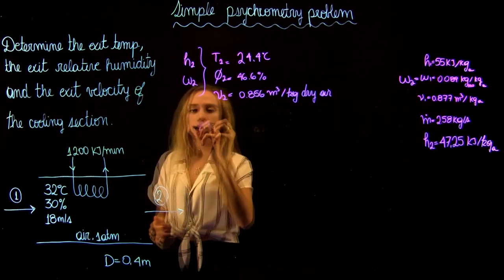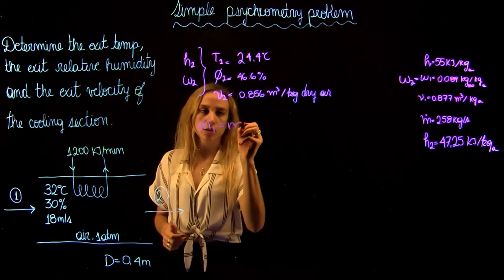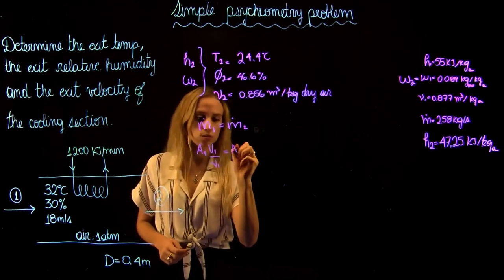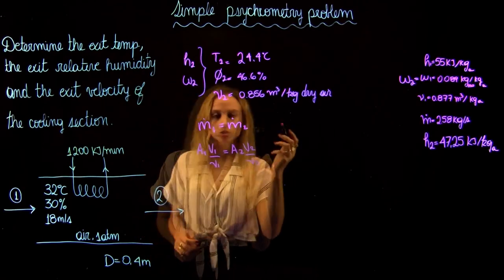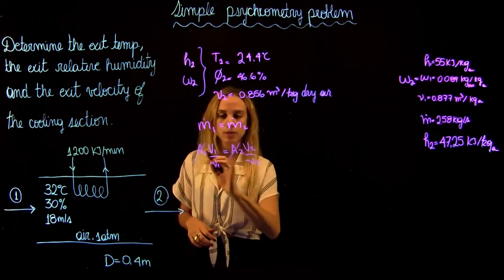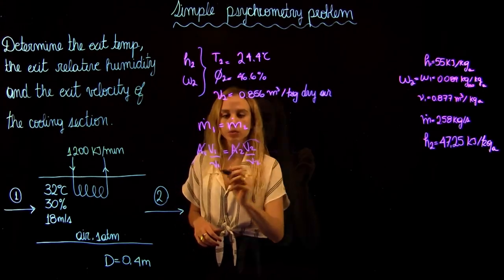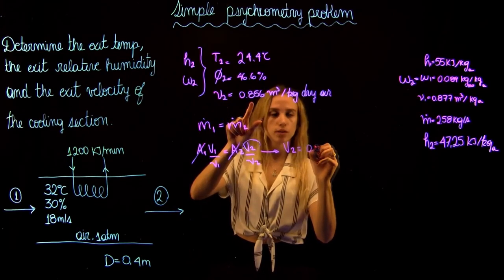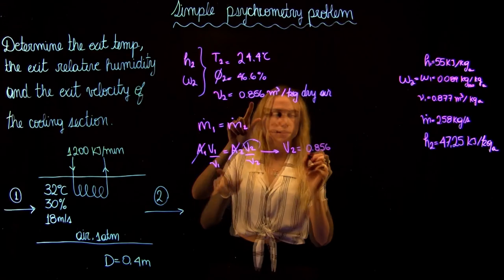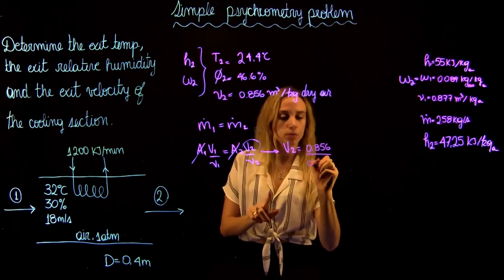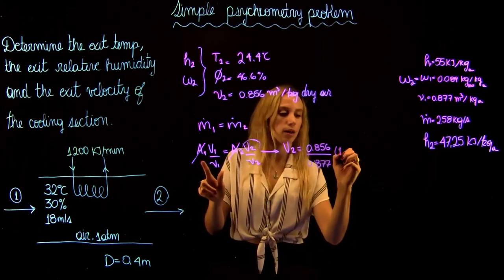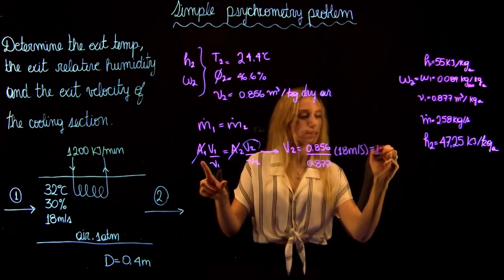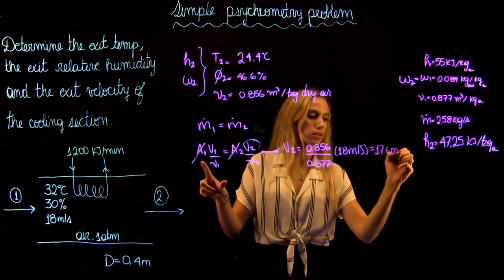For the exit velocity, the mass flow rate remains constant. Since it's a straight pipe, the cross-sectional area is the same. So we can solve for v2 as the specific volume at state 2 divided by the specific volume at state 1, times the velocity at state 1. That gives 0.856 divided by the specific volume at state 1, times 18 meters per second, equaling approximately 17.6 meters per second.